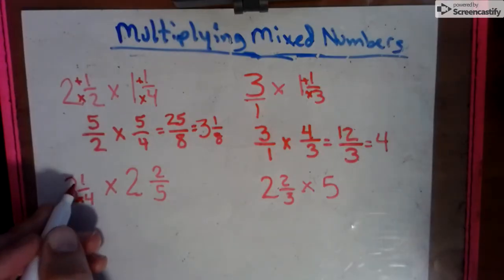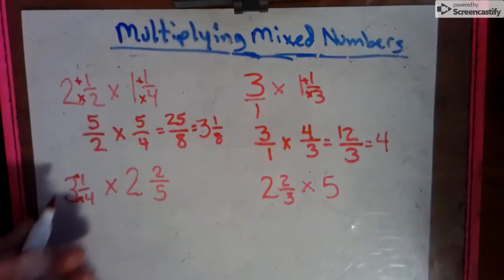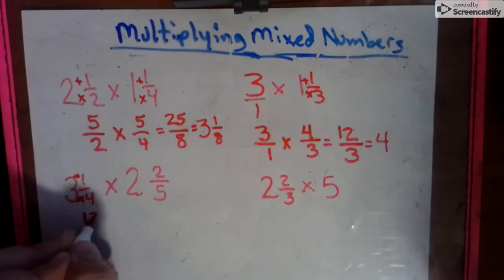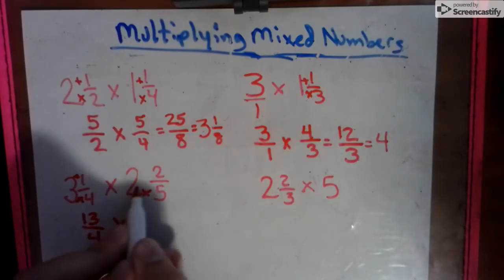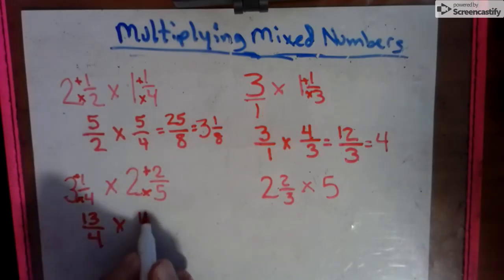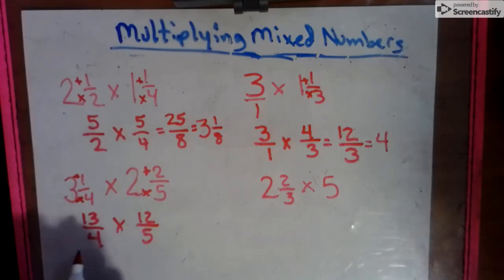Denominator times the whole number, add the numerator. So that's 12, 13 over 4. Keep that sign. 10, 11, 12 over 5. Okay.